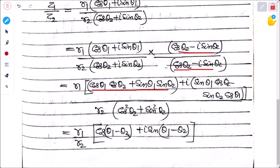The real part simplifies to cos(θ₁ − θ₂) and the imaginary part to sin(θ₁ − θ₂). The denominator becomes cos²θ₂ + sin²θ₂ = 1. Therefore z₁/z₂ = (r₁/r₂)[cos(θ₁ − θ₂) + i sin(θ₁ − θ₂)].